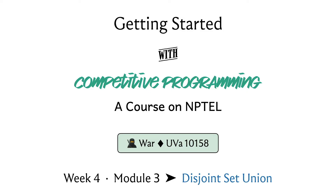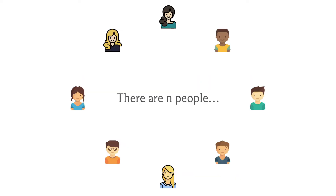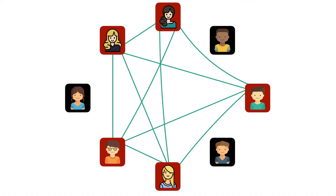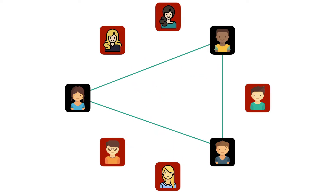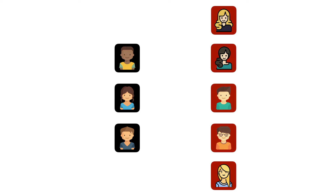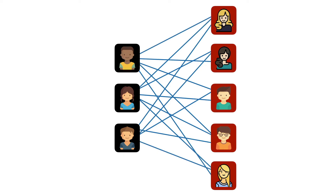So with that said, let's begin as always by taking a look at the problem statement. We are given n people who are present at a party. Each one of them belongs to one of two countries. I've coded the two countries with a maroon and a black background. People who are from the same country are all friends with each other — here we have a group of five mutual friends on one hand and three mutual friends on the other.